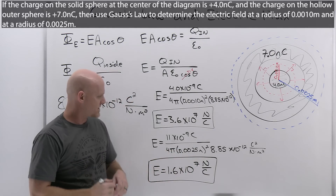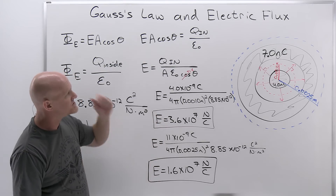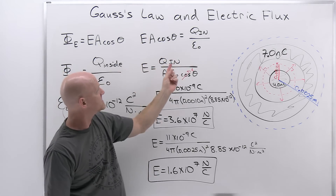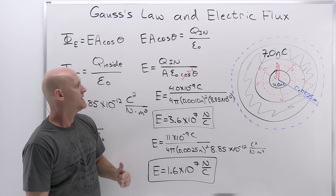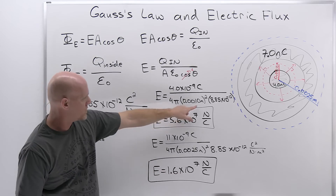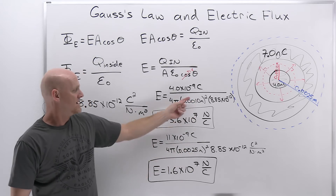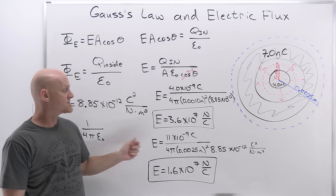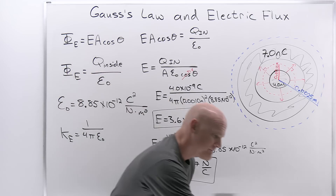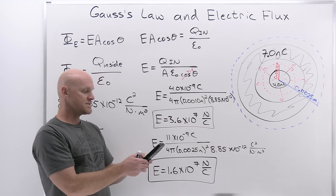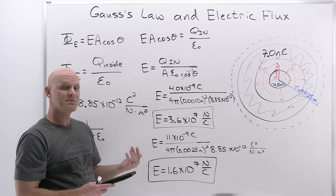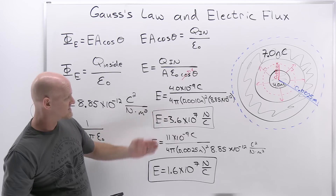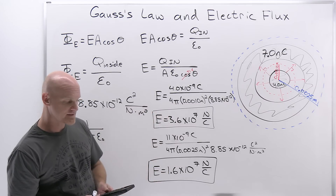Let's verify this makes sense: the enclosed charge increased from 4 to 11 nC (nearly tripled), but the radius increased by a factor of 2.5 from 0.001 to 0.0025 m, and since we divide by r², the area factor increases by 2.5² = 6.25. Tripling the charge but dividing by 6.25 gives a net factor of about 0.48, meaning the field should be roughly cut in half. Indeed, 3.6 × 10⁷ cut in half is about 1.8 × 10⁷, consistent with our answer of 1.6 × 10⁷.